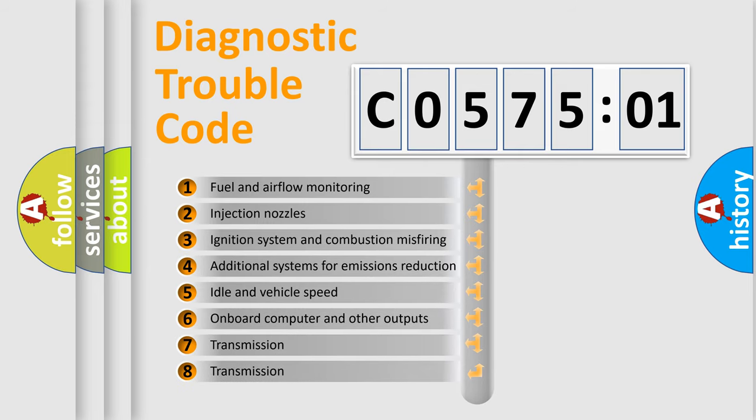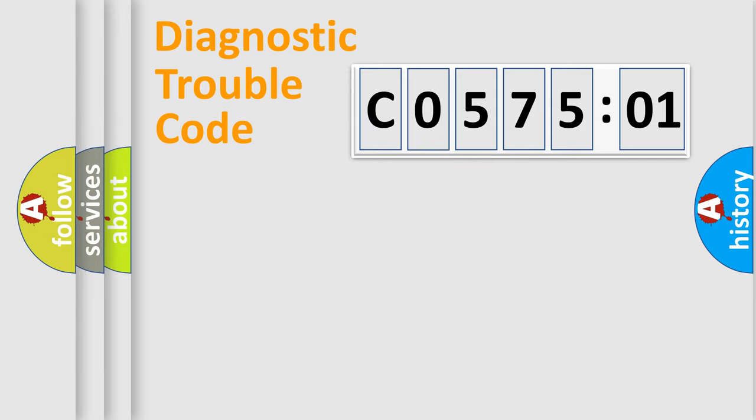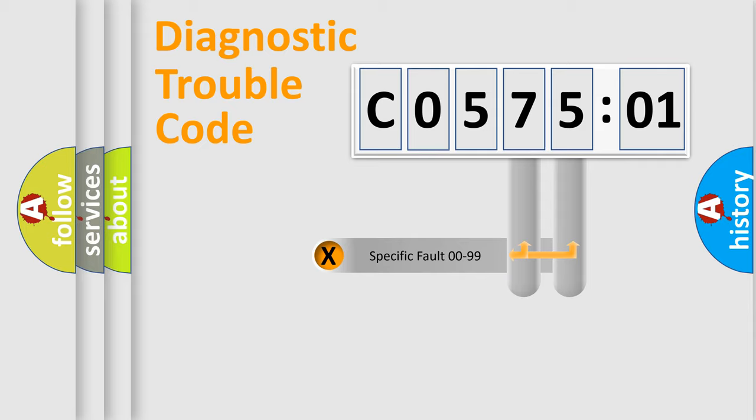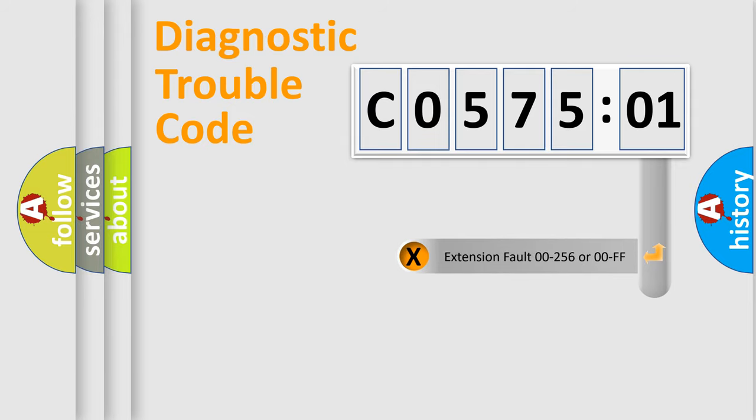The third character specifies a subset of errors. The distribution shown is valid only for the standardized DTC code. Only the last two characters define the specific fault of the group. The add-on to the error code serves to specify the status in more detail.